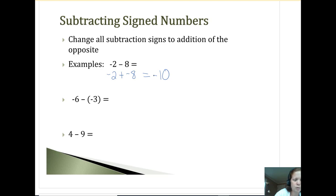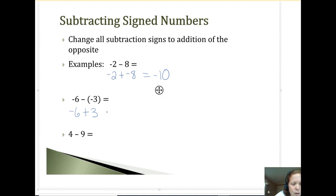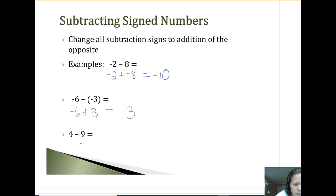Here's where we really should change it: anytime we have minus-negative. So negative six minus negative three is going to change to negative six plus three — change the minus to a plus and the negative three becomes positive three. You can think of it as two minus signs becoming a plus sign. Different signs: difference of six and three is three, six is bigger, so the answer is negative three. And four minus nine changes to four plus negative nine: difference is five, nine is bigger, so negative five.